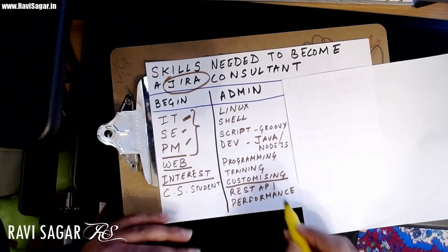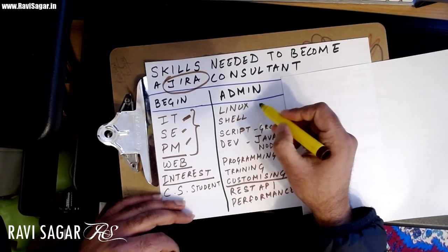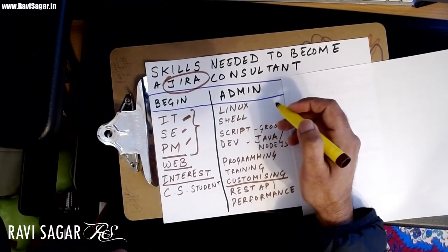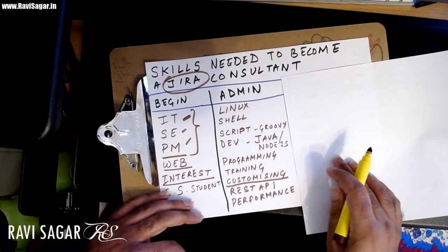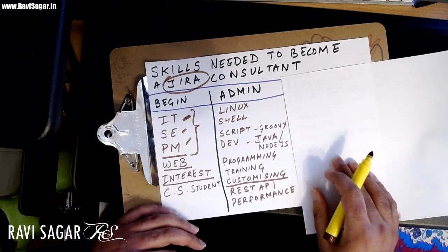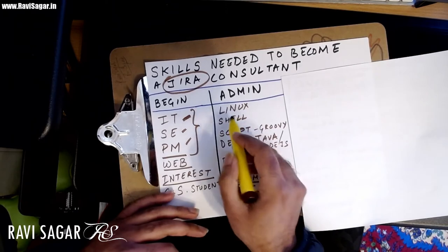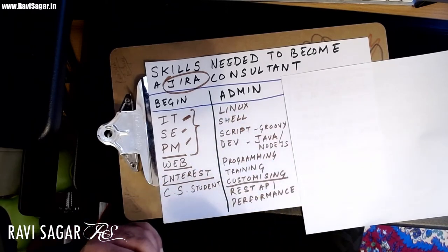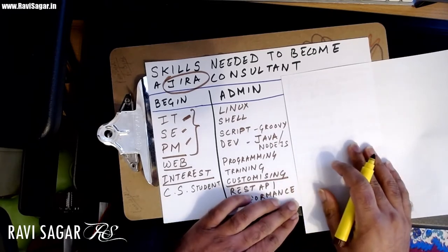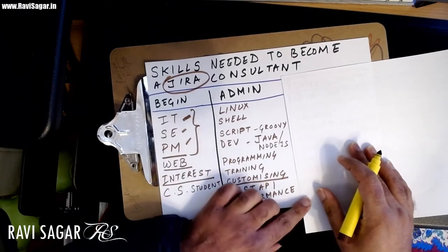There are different types of Jira administrators. Apart from customization, you can also do activities like installing or upgrading Jira or other Atlassian tools like Confluence. Most Jira, Confluence, and Bitbucket instances are usually running on Linux, though you can also use Windows Server. If you want to go a bit more technical and add more things to your skill set beyond Jira customization, learning Linux is a great addition.